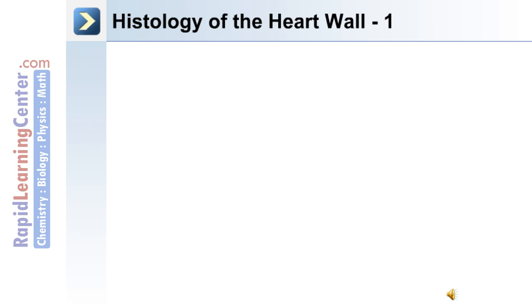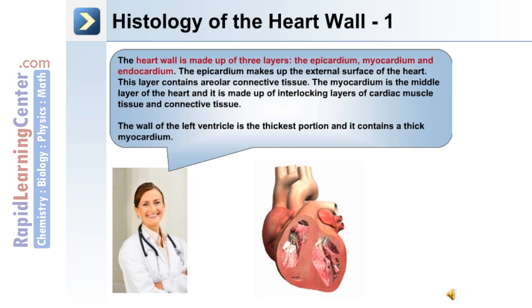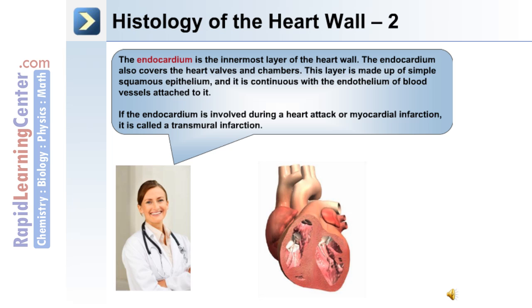The histology of the heart wall: the wall of the heart is made up of three layers — the epicardium, myocardium, and endocardium. The epicardium makes up the external surface of the heart and contains areolar connective tissue. The myocardium is the middle layer and is made up of interlocking layers of cardiac muscle tissue and connective tissue. The wall of the left ventricle, for example, is the thickest portion and contains a thick myocardium. The innermost layer of the heart is known as the endocardium, which also covers the heart valves and chambers.